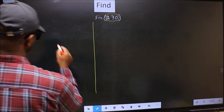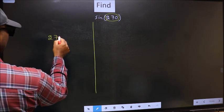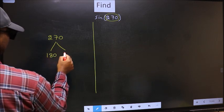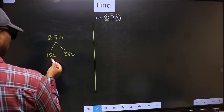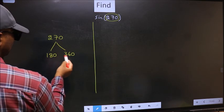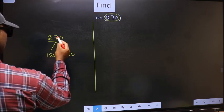What I mean is, 270 lies between 180 and 360. This is 180 times 1 and this is 180 times 2. Between these two numbers, 270 lies.